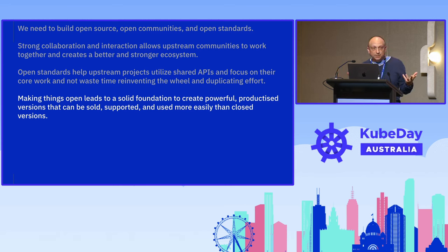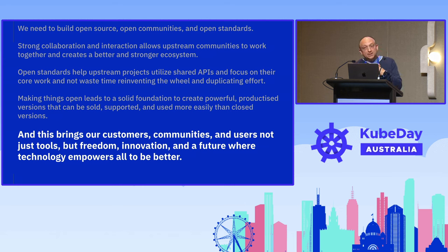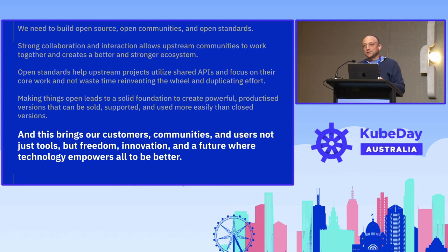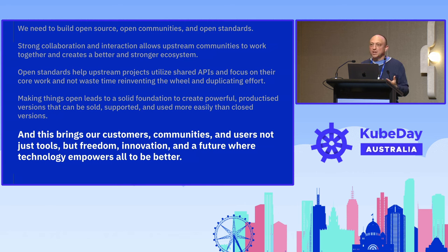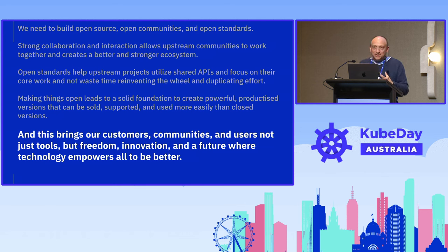We need to build open source, open communities, and open standards — that's obvious. Collaboration and interaction allow upstream communities to work together, creating a much stronger ecosystem. Open standards help upstream projects utilize shared APIs so they focus on core work and don't waste time duplicating effort. We need to use the multi-cluster standard for multi-cluster and grow that out. Making things open leads to a solid foundation for powerful, productized versions — and we need to be able to fund more innovation. You're also a consumer of this tooling, so you want to have a hand in how it's going to work.